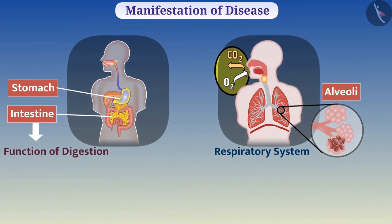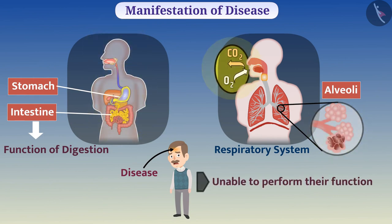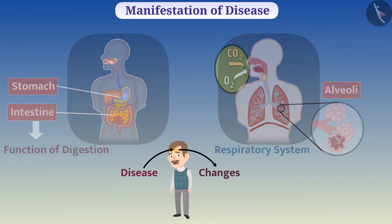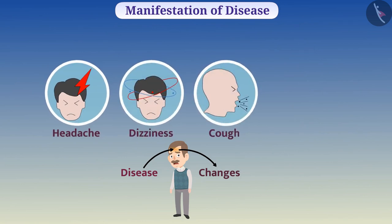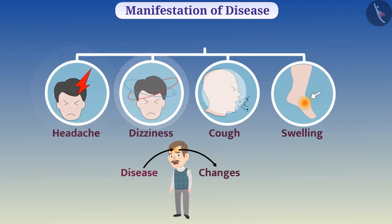But when there is a disease in the body, then one or several organ systems are unable to perform their function. Changes are seen in those organs, like headache, dizziness, cough, swelling, and many more. These changes are called symptoms.